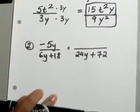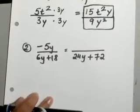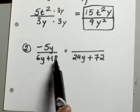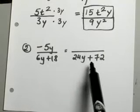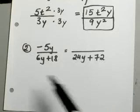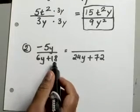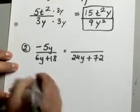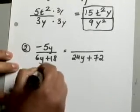Let's try and look at another example. We're still trying to do the same thing. You start out with negative 5y over 6y plus 18, and now you want your denominator to be 24y plus 72. So what do you need to multiply 6y plus 18 into to end up with 24y plus 72? Just like we did above.